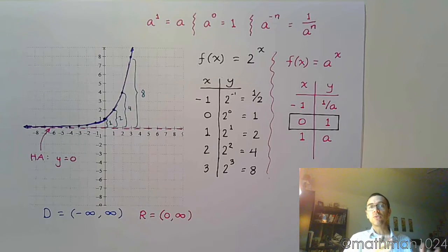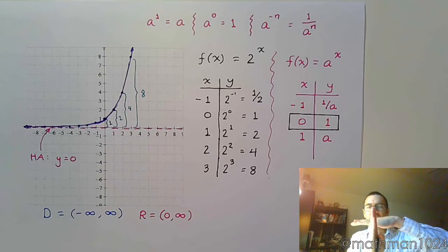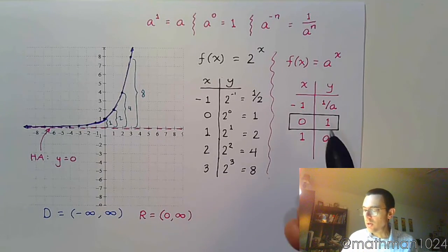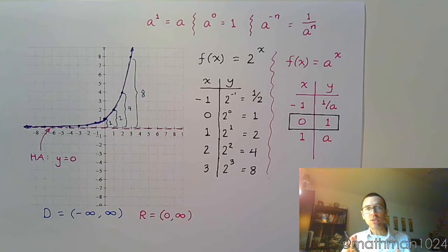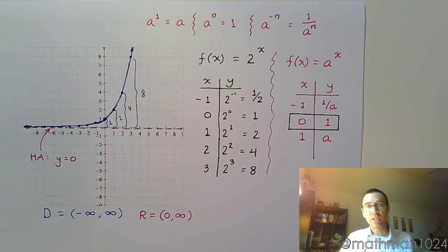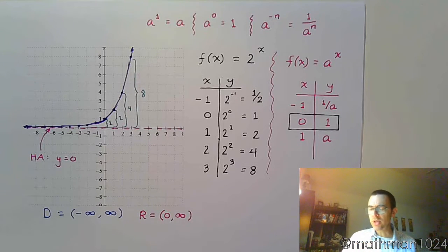So when you start to shift the graph and move it around, once you find your new x and y axes, you're going to plot (0, 1), and you're going to build from there. And all the shifting and translations, all that stuff that we've done before is still going to be true for these guys. It's just a different shape. We're going to see some of those in the next video.